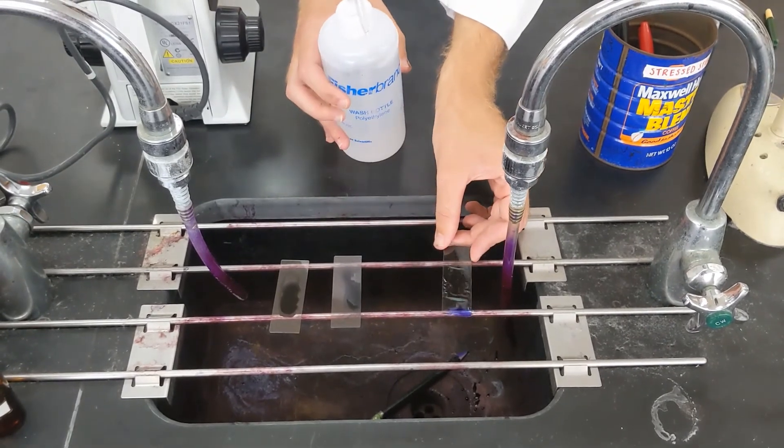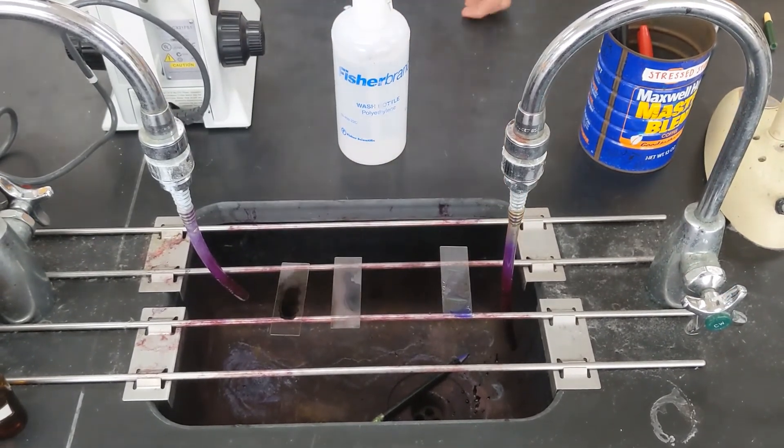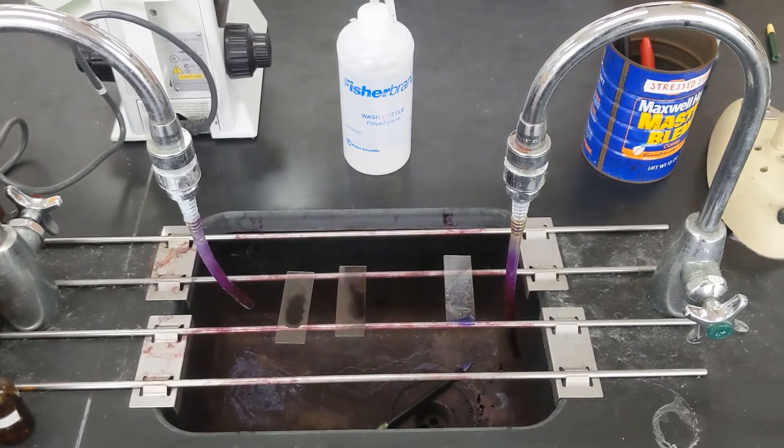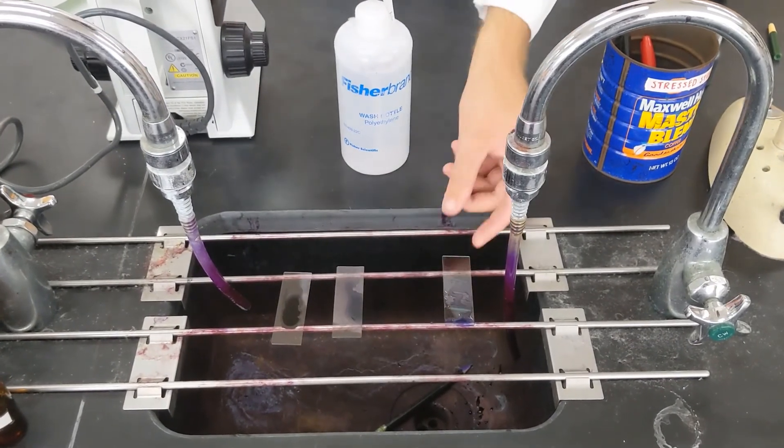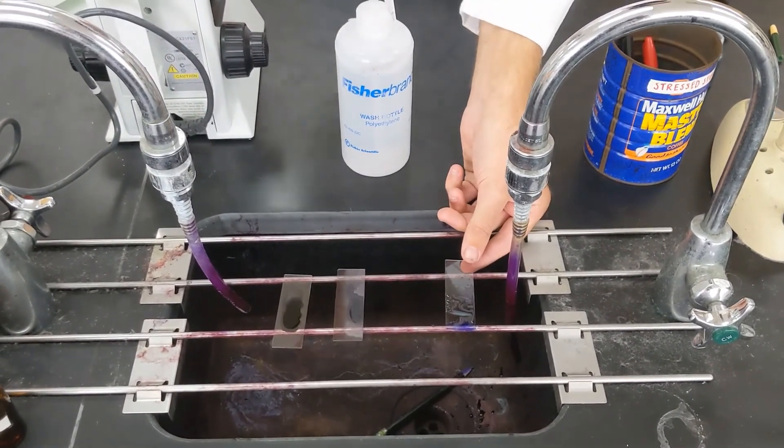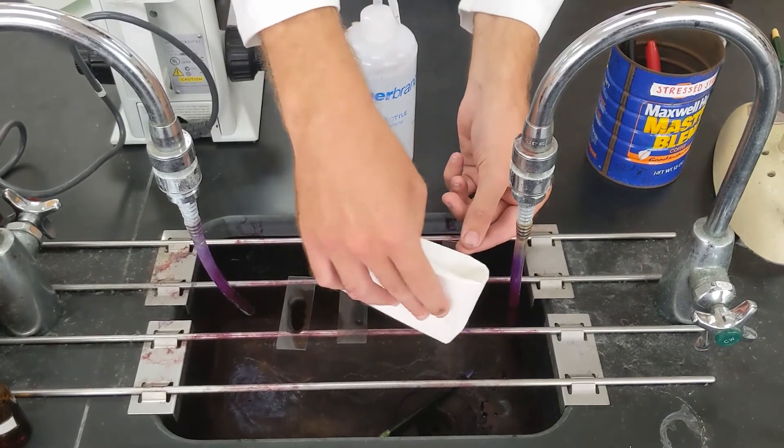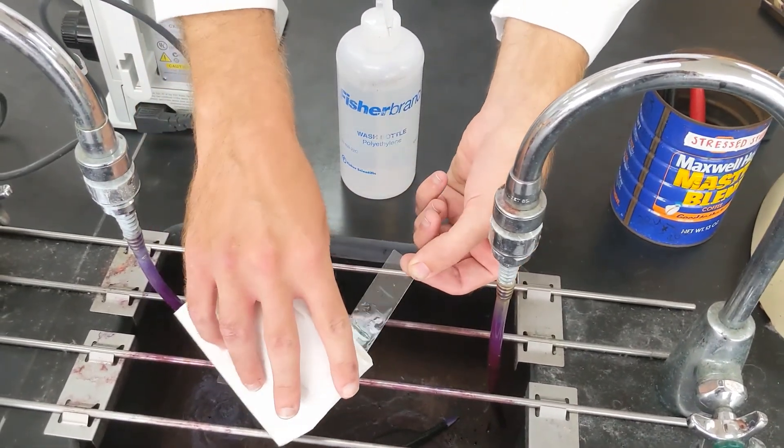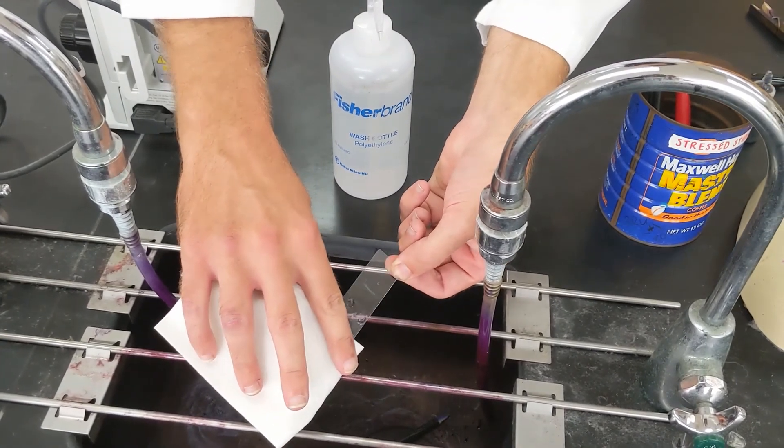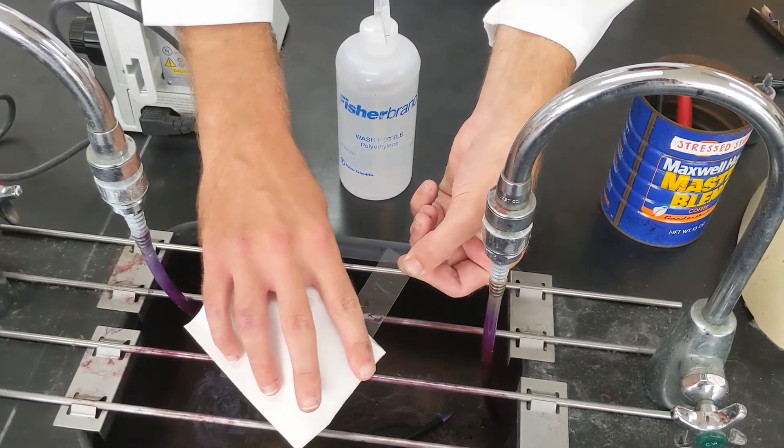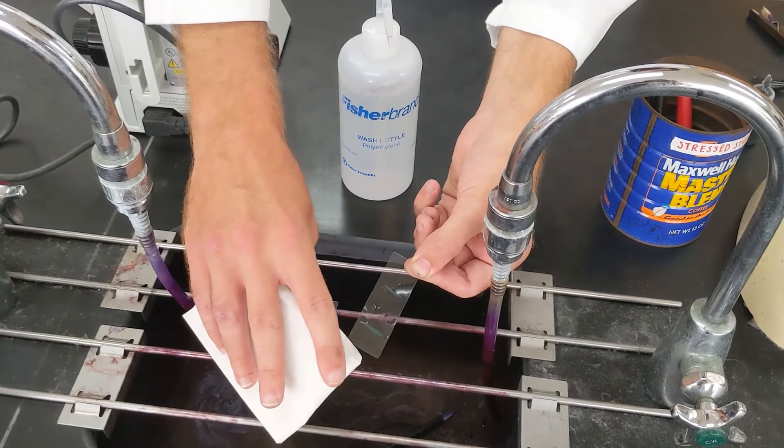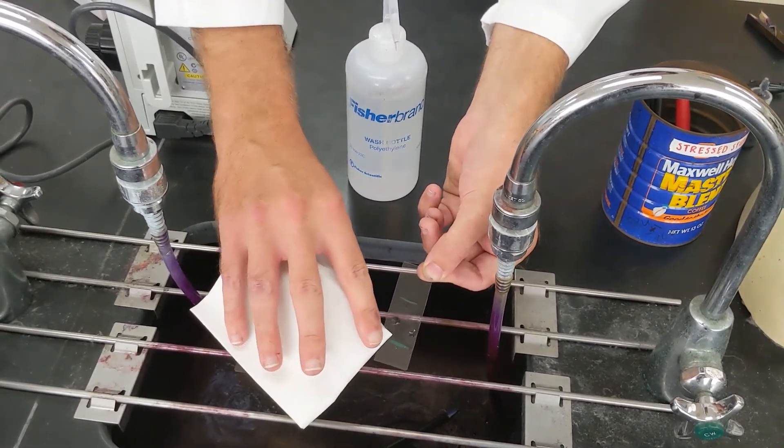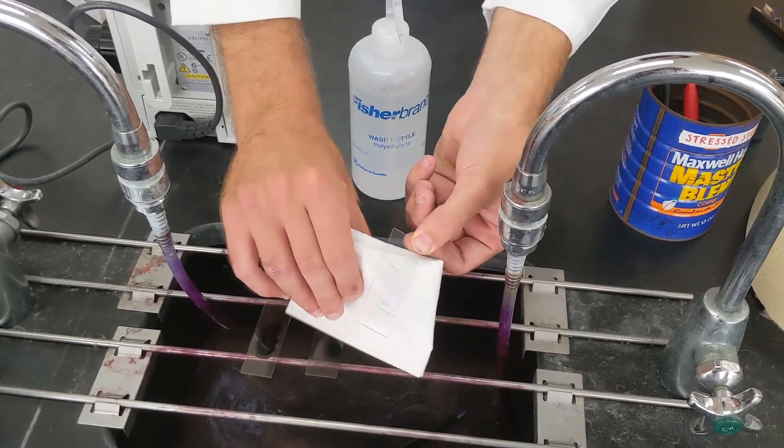Now after that, to dry off the slide, take a paper towel or a kim wipe, either works, and just kind of touch the edges gently. So kind of just blot it dry. It's important right now that you're not wiping off the slide really, really hard, because if you wipe off the slide, there's a chance you'll wipe off the bacteria as well. So just kind of just touching it is most important.